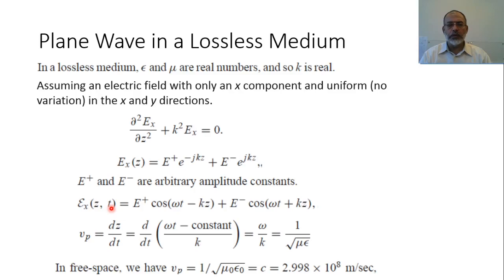Now we solve this wave equation to obtain the electric and magnetic fields. We start with the plane wave in a lossless medium. A lossless medium has no conductivity and no imaginary part of epsilon, so epsilon and mu are real numbers, which means k is a real value, since k equals omega times the square root of mu-epsilon.